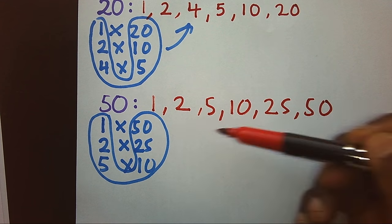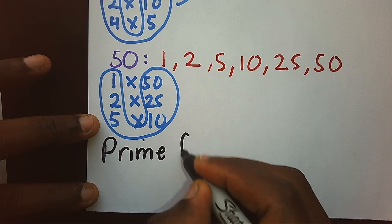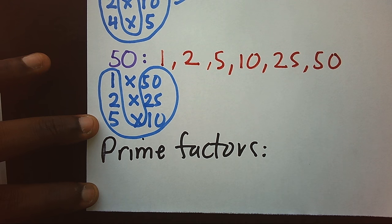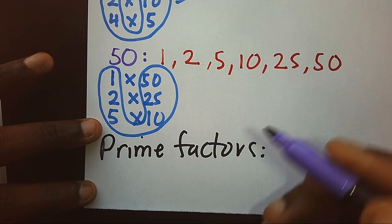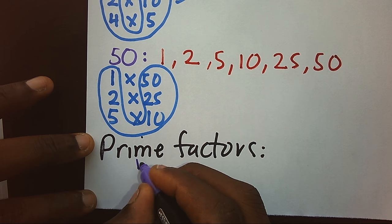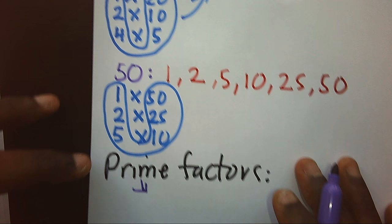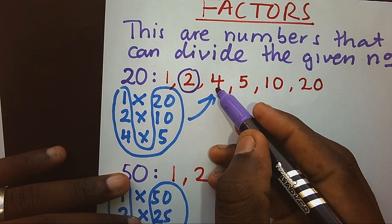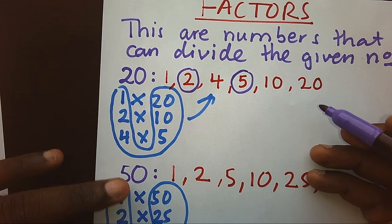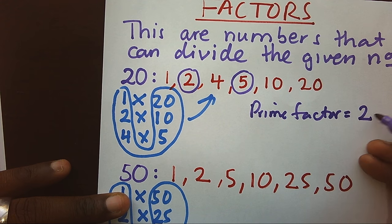Now, among the factors, we also have what we call prime factors. Prime factors are prime numbers that are factors of the given number. Prime numbers are numbers that can be divided by 1 and itself only. Looking at our example of 20, among its factors, 2 is a prime number, 4 is not, 5 is a prime number, and the rest are not. Therefore, the prime factors of 20 are 2 and 5.